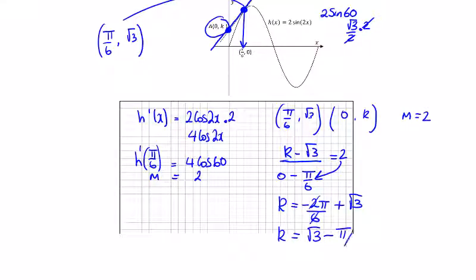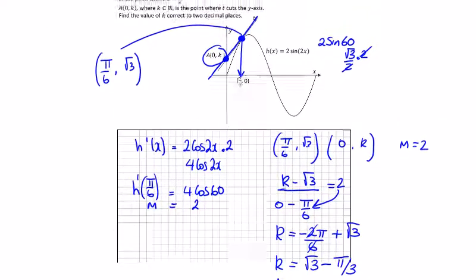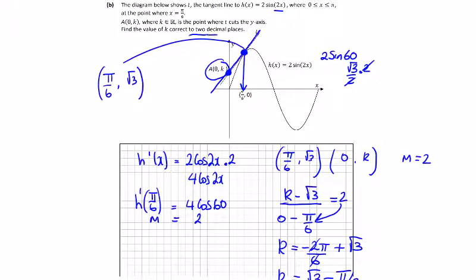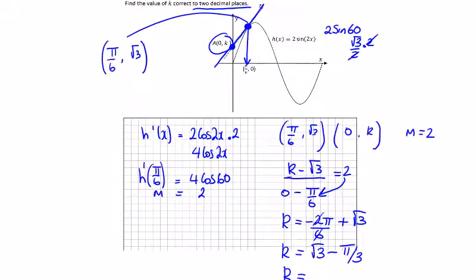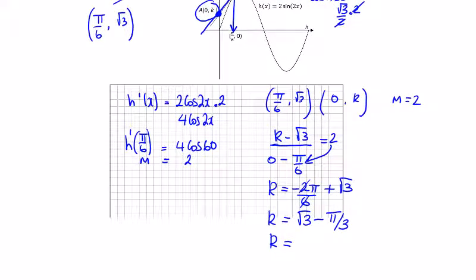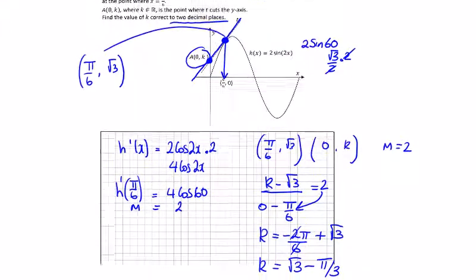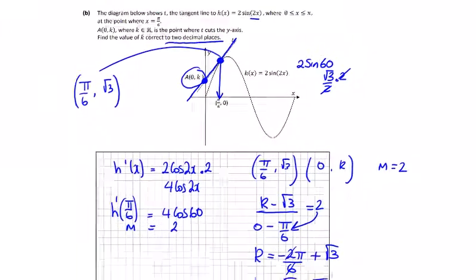So k is equal to root 3 minus minus pi over 3, and this is where pi becomes a decimal. And we type this into our calculator, what format did I want it in? Correct to two decimal places. My calculator is giving me 0.6848, which is 0.685.